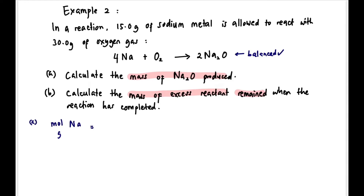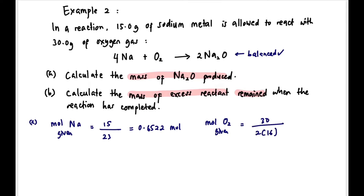Always start by calculating mole given. Mole Na = 15 g ÷ 23 (molar mass) = 0.6522 mol. Mole O₂ = 30 g ÷ (2 × 16) = 0.9375 mol. Now we have both moles of reactants given.